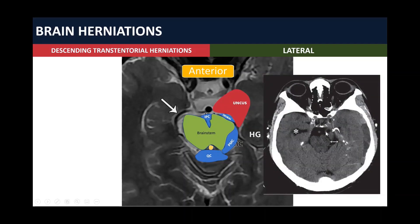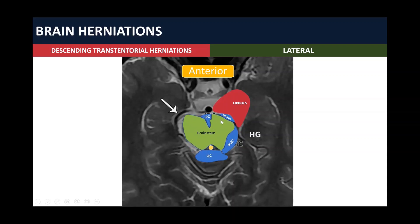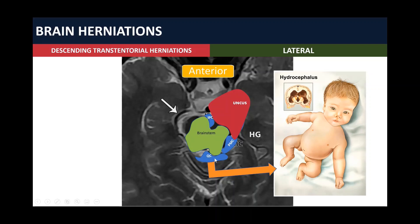When the uncus enlarges further, there will be complete effacement of the crural cistern, effacement of the perimesencephalic cistern, and compression of the brain stem with rotation of its axis. There will also be compression of the cerebral aqueduct, leading to hydrocephalus, and compression of the quadrigeminal cisterns with compression of the superior tectal plate, which leads to Parinaud syndrome. Remember: the anterior lateral DTH commonly presents before the posterior one.